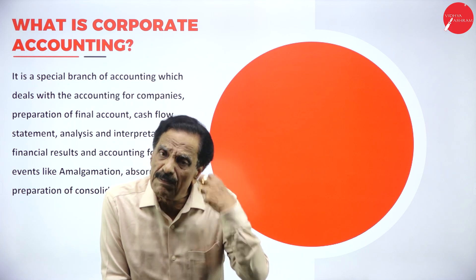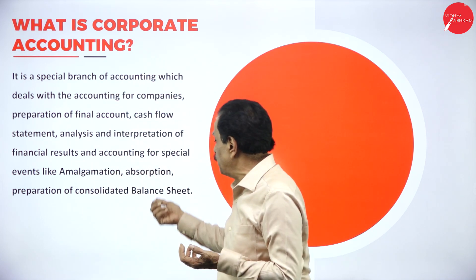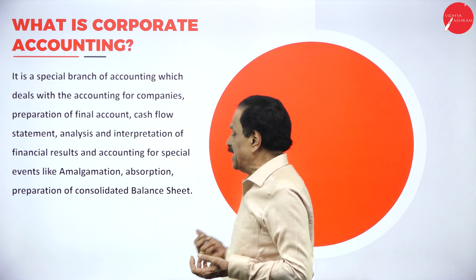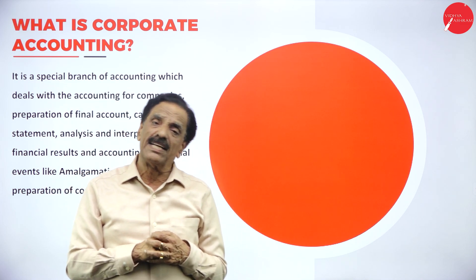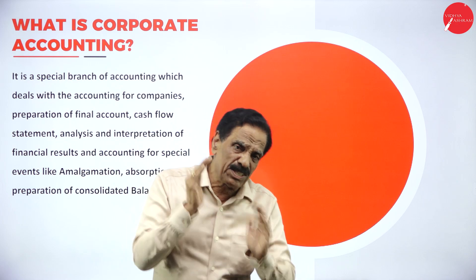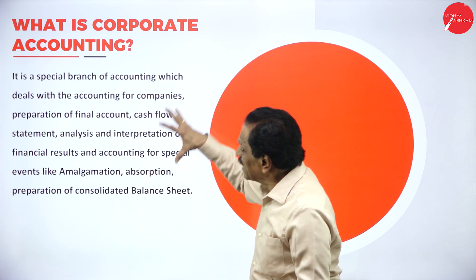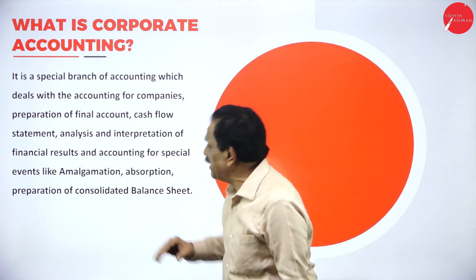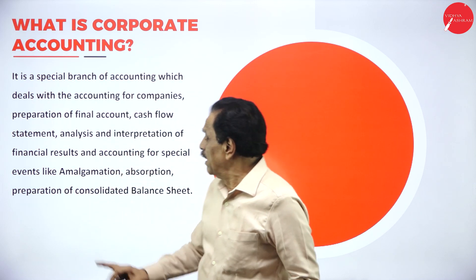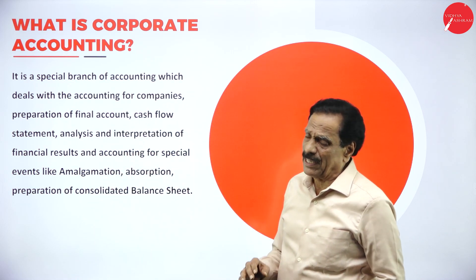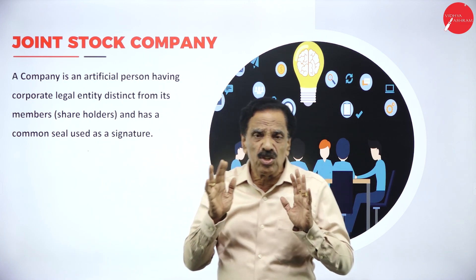Then there is absorption, where a strong company absorbs the weak company, and the weak company's shareholders become shareholders of the strong company. Consolidation is where two companies combine and prepare one consolidated balance sheet. These topics — amalgamation, absorption, and preparation of consolidated balance sheet — are part of corporate accounting. We are now going to deal with the issue of shares of a joint stock company.